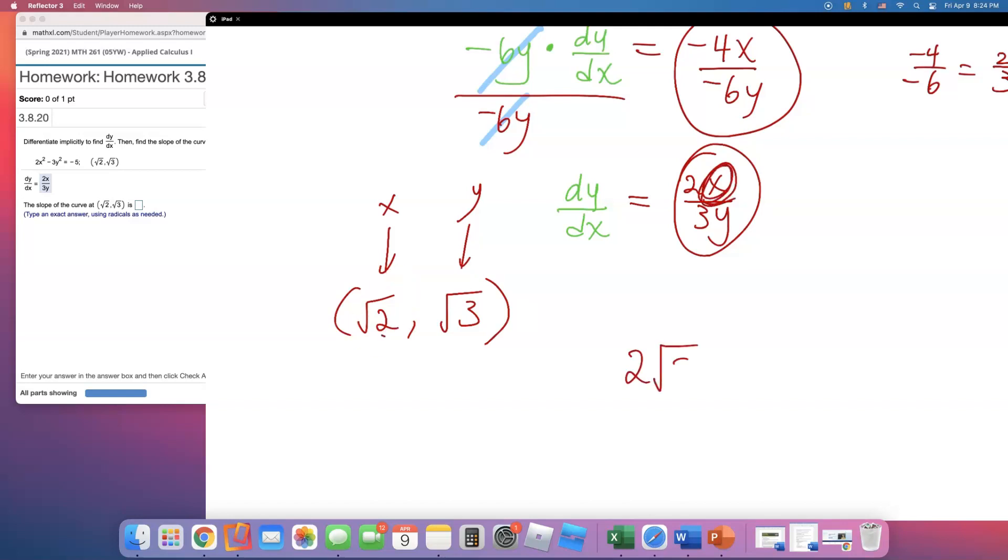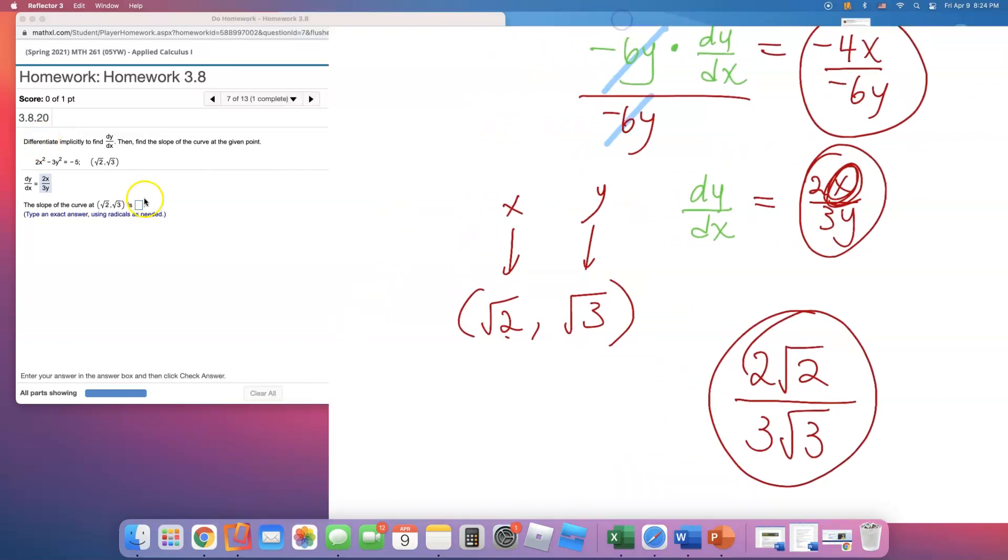That will be 2 times square root of 2. The bottom of the fraction is 3 times the y value of square root of 3. And that is it. It's just ugly. That's probably why you thought it was a little bit different.